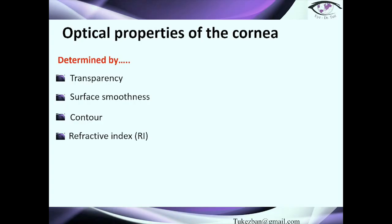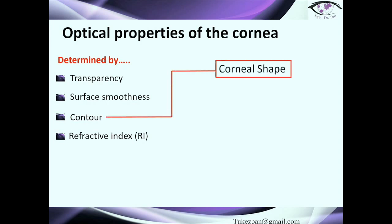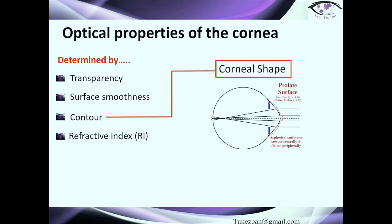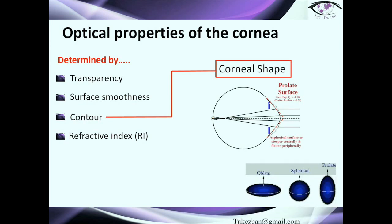The optical properties of the cornea are determined by transparency, surface smoothness, contour, and refractive index. I want to draw attention to contour because it is very important. When we talk about contour, we mean corneal shape, and what is important to know is that the cornea is prolate. When we talk about the prolate surface, there are actually three basic shapes of the cornea: oblate, spherical, and prolate.